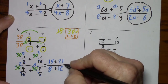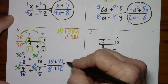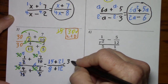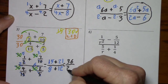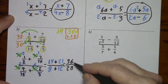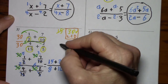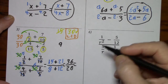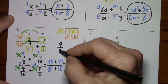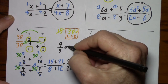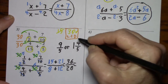And we can clean this up. 15 and 21 is 36. 8 and 12 is 20. There's a common factor of 4, so divide by 4 — leaves us with 9. Divide by 4 — leaves us with 5. And 9 fifths can also be written as 1 and 4 fifths. Either answer is fine.